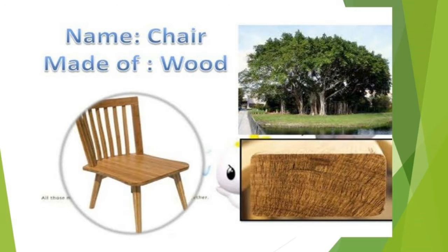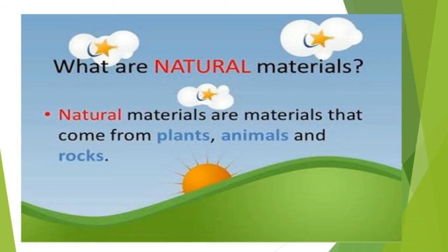From natural sources, man makes many materials — for example, wooden blocks — which are used to make many other things, for example, a wooden basket. So from a natural source, man makes materials and then he makes things. Now we will see about the sources of natural materials.